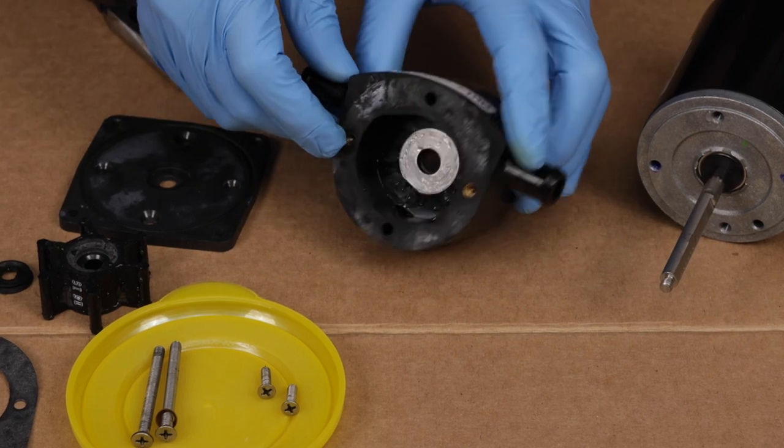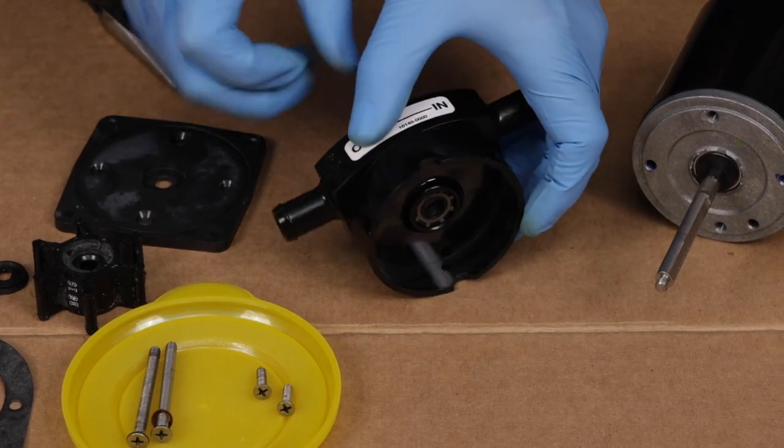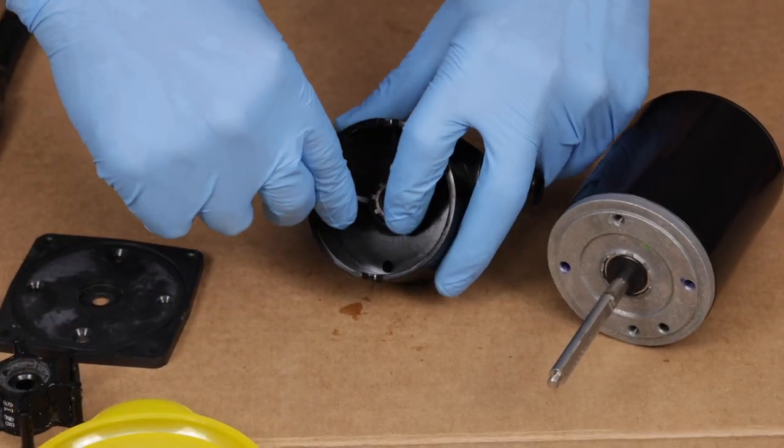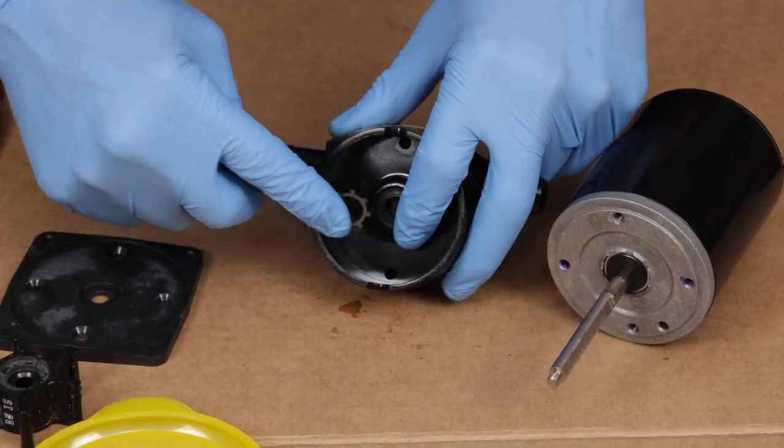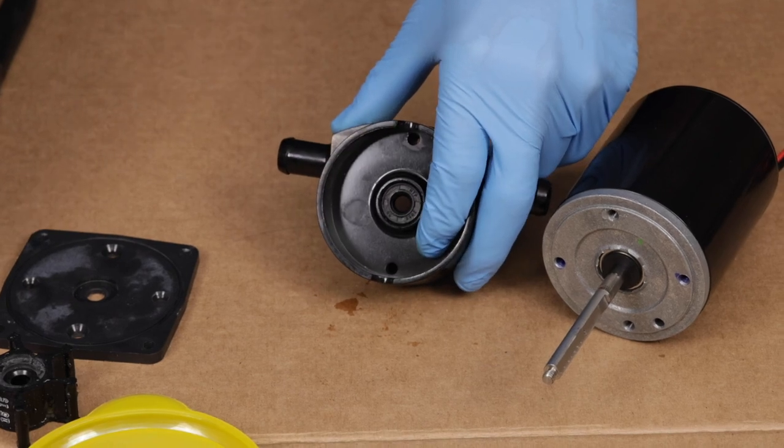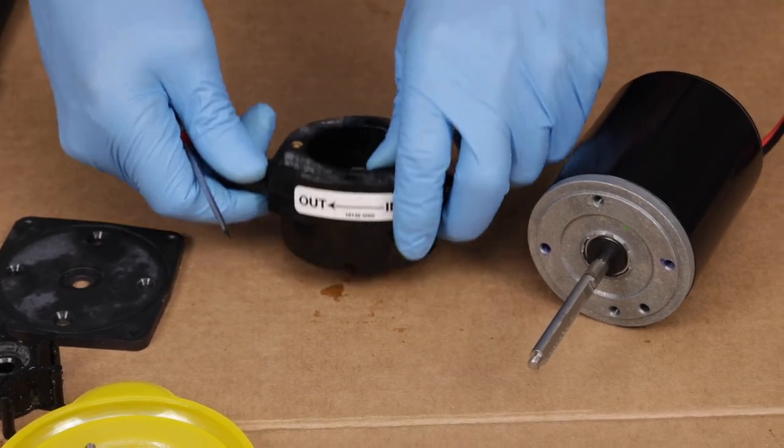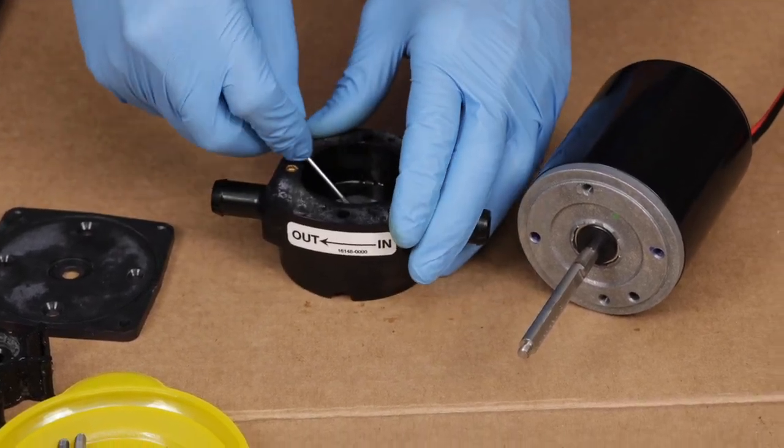Turn the body over and, using the small flathead screwdriver, pry out the star-shaped seal retainer. Then turn it back over, push out the seal, and remove any debris from the seal seat.